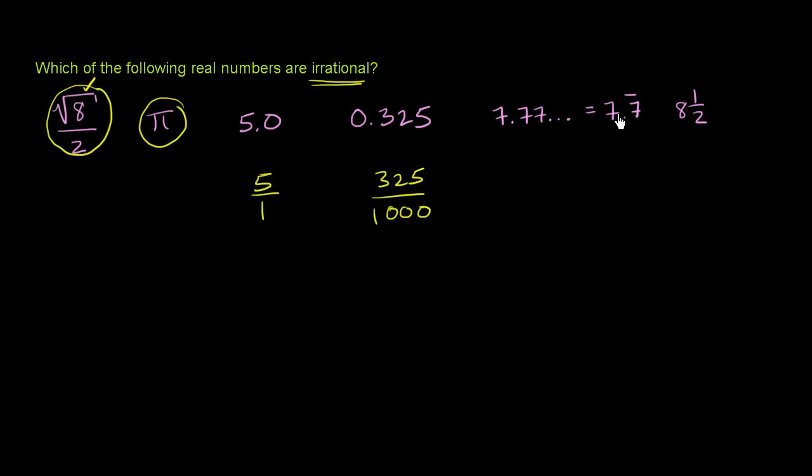Now if you have a repeating decimal, in other videos we'll actually convert them into fractions, but a repeating decimal can be represented as a ratio of two integers. Just as 1/3 is equal to 0.333 on and on and on, or I could say 3 repeating. We can also do the same thing for that. I won't do it here. But this is rational. So it's not irrational.